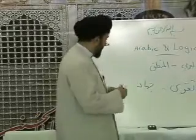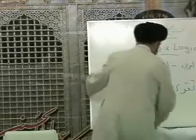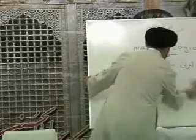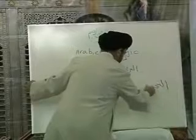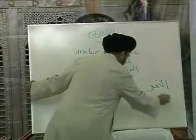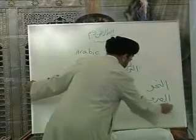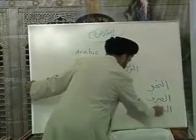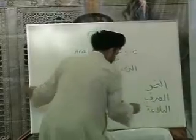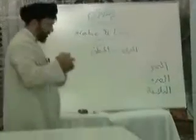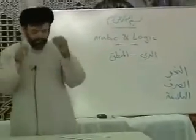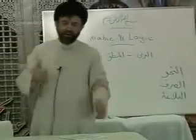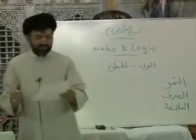So three things here are very important: an-nahw, as-sarf, al-balagha. In Hosea, you have to learn all these three parts of the Arabic language.